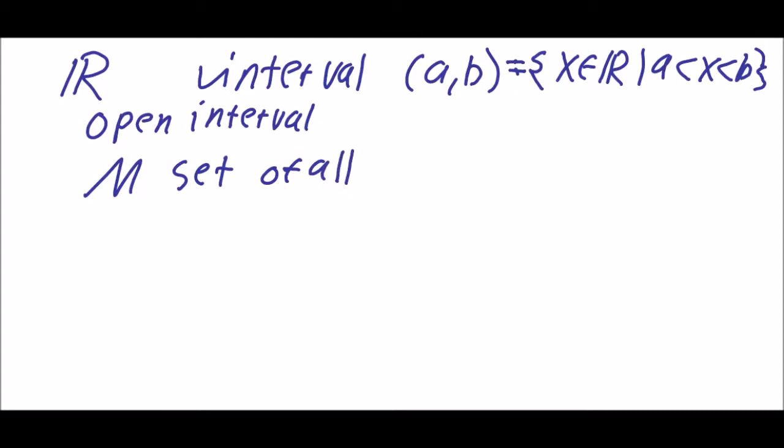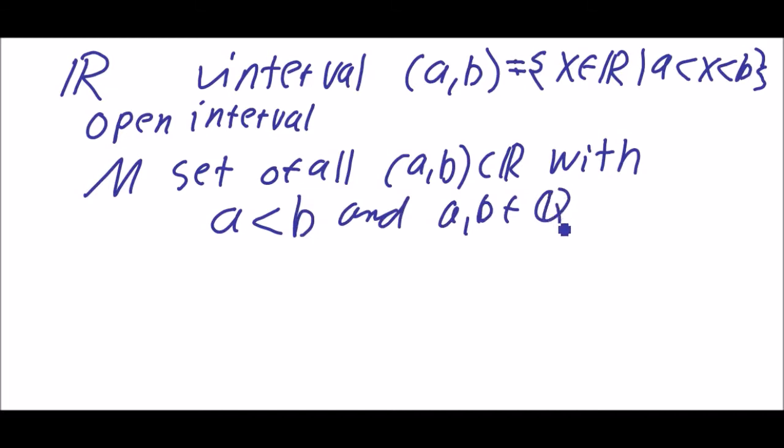And let M be the set of all open intervals. It's all (a,b) in R with a less than b and a,b in Q, so they both have to be rational. And now we call the set of all countable unions, intersections and relative complements of members of M the Borel sigma algebra of R.